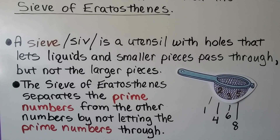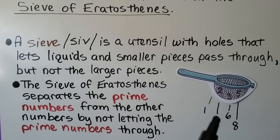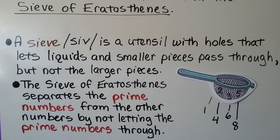A sieve is a utensil with holes that lets liquids and smaller pieces pass through, but not the larger pieces. The sieve of Eratosthenes separates the prime numbers from the other numbers by not letting the prime numbers through.